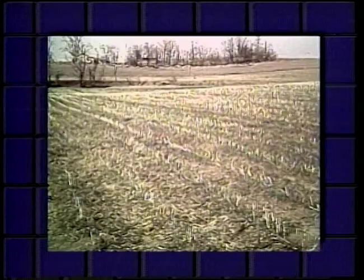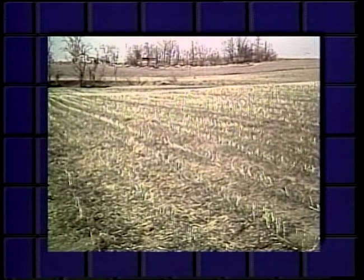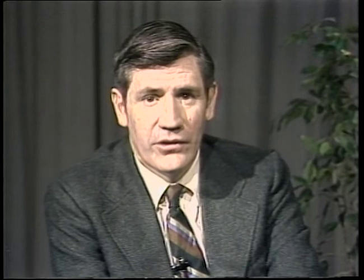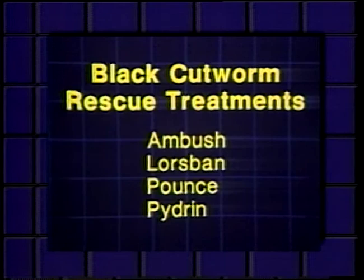Corn planted into soybean stubble or other no-till situations is most likely to sustain cutworm damage. You should concentrate on scouting in such fields, but not to the exclusion of other fields that remain unworked at the time cutworms are flying. Should an economic infestation of black cutworms occur in your field, ISU recommends one of four materials. When the soil is crusty or dry, control can be improved by rotary hoeing. Lorox band-treated fields can be sprayed before or after rotary hoeing. Ambush, Pounce, or Pydrin should be applied after rotary hoeing to avoid incorporation.